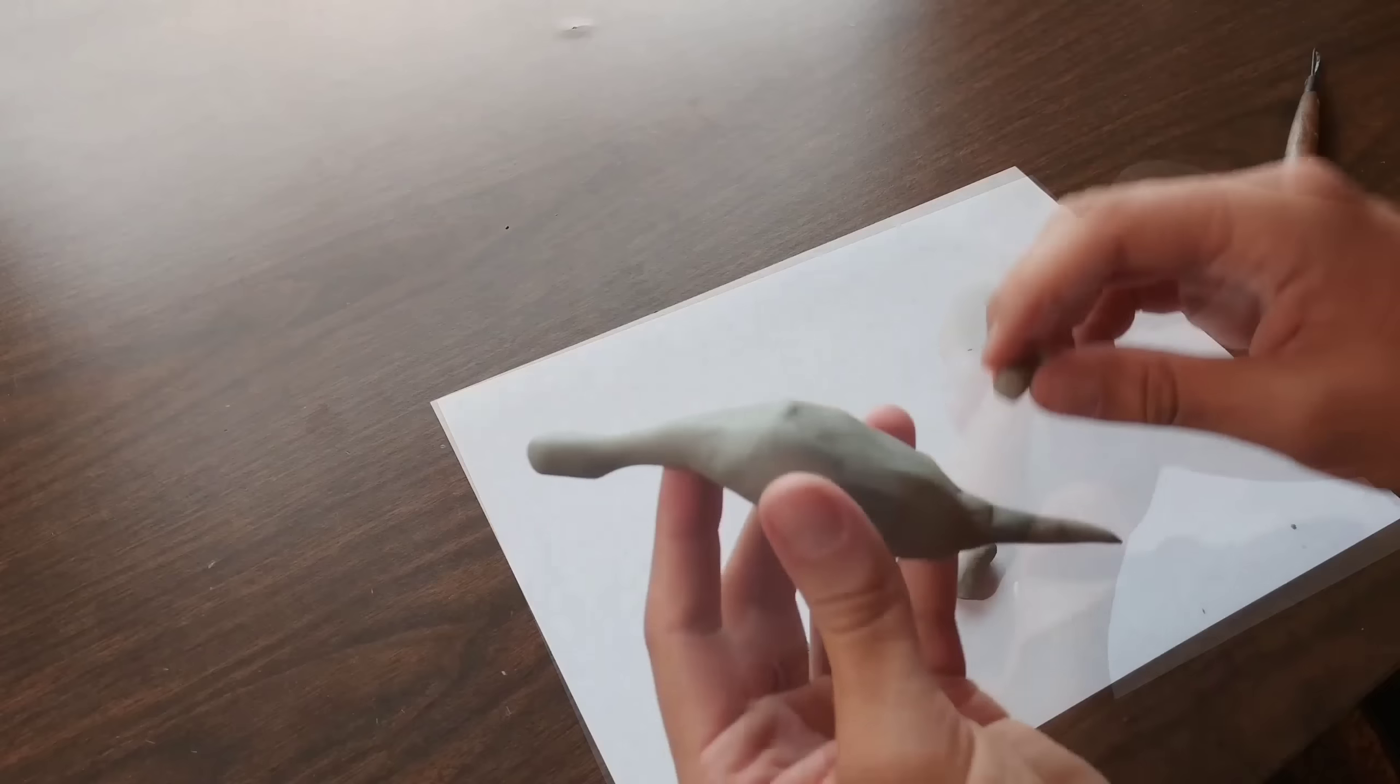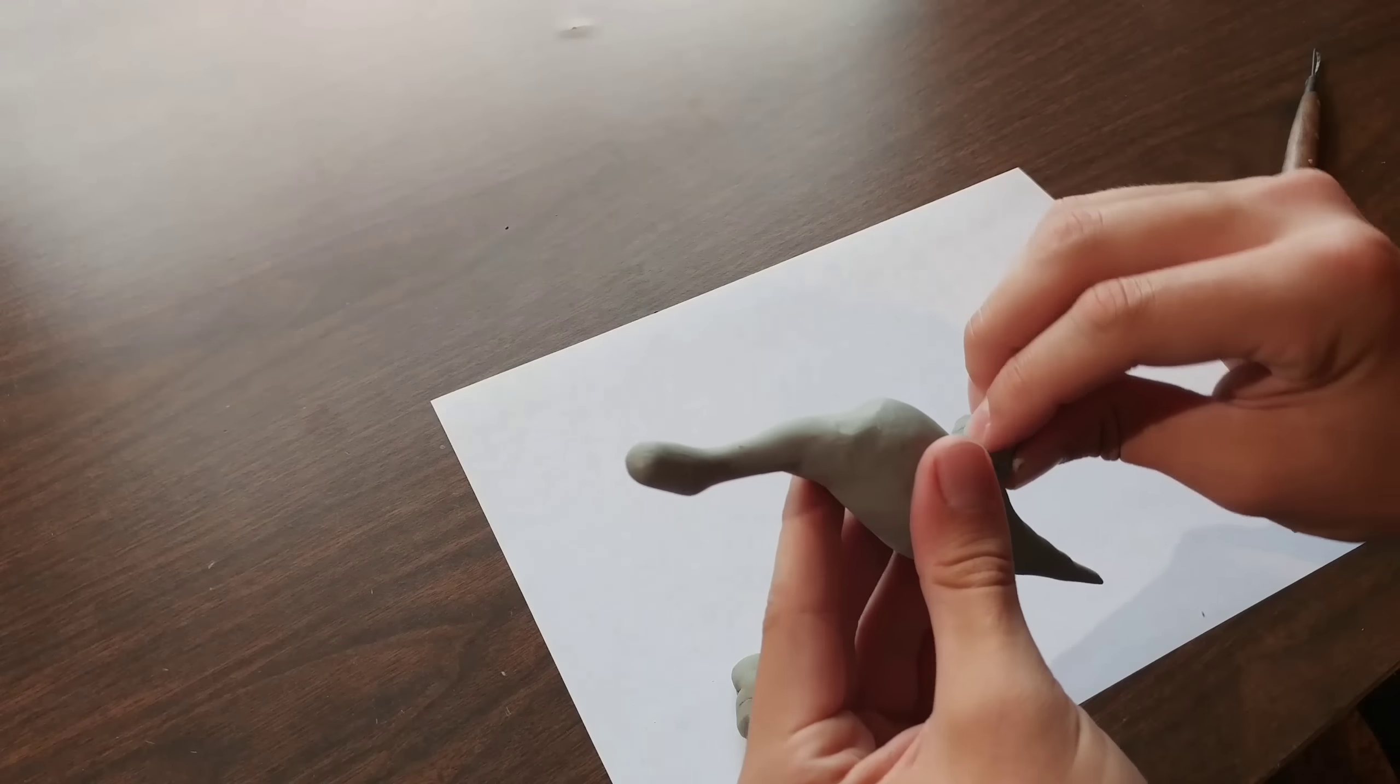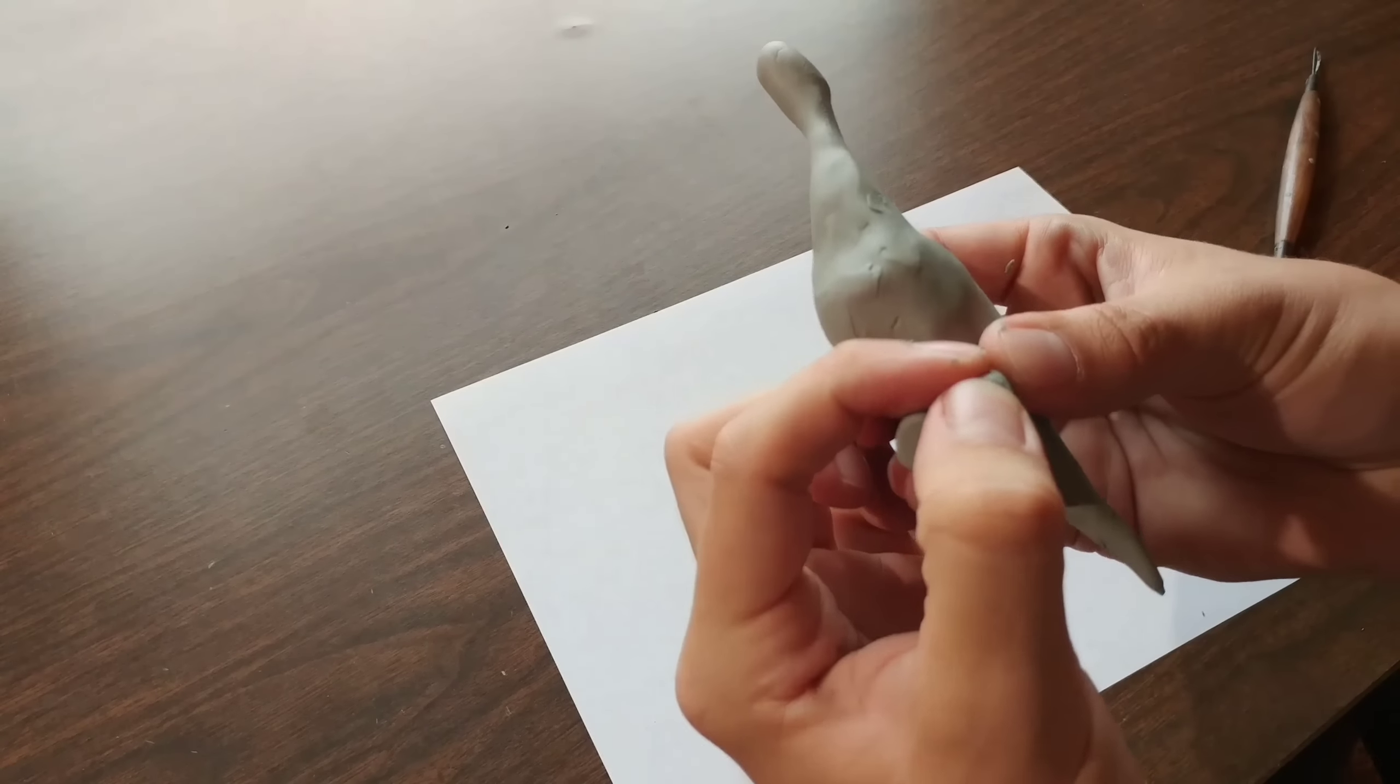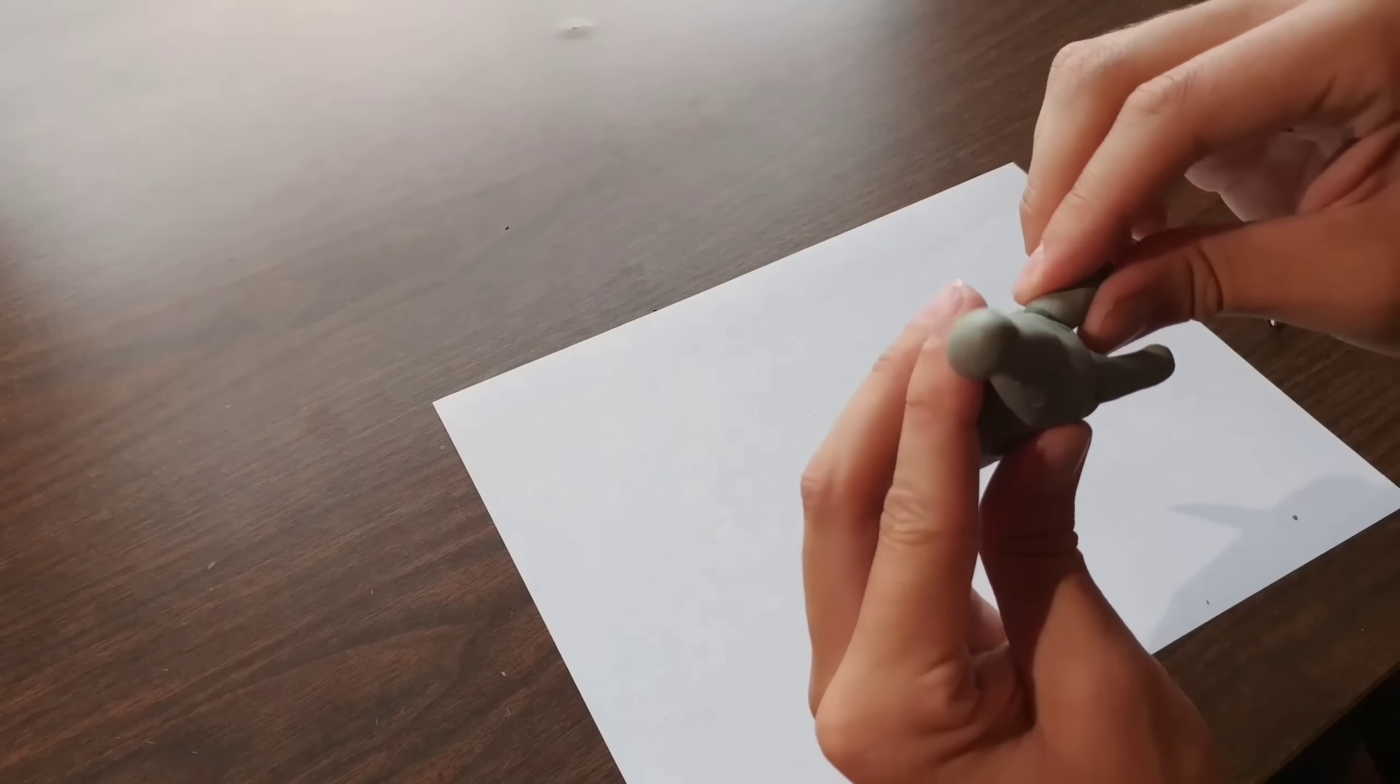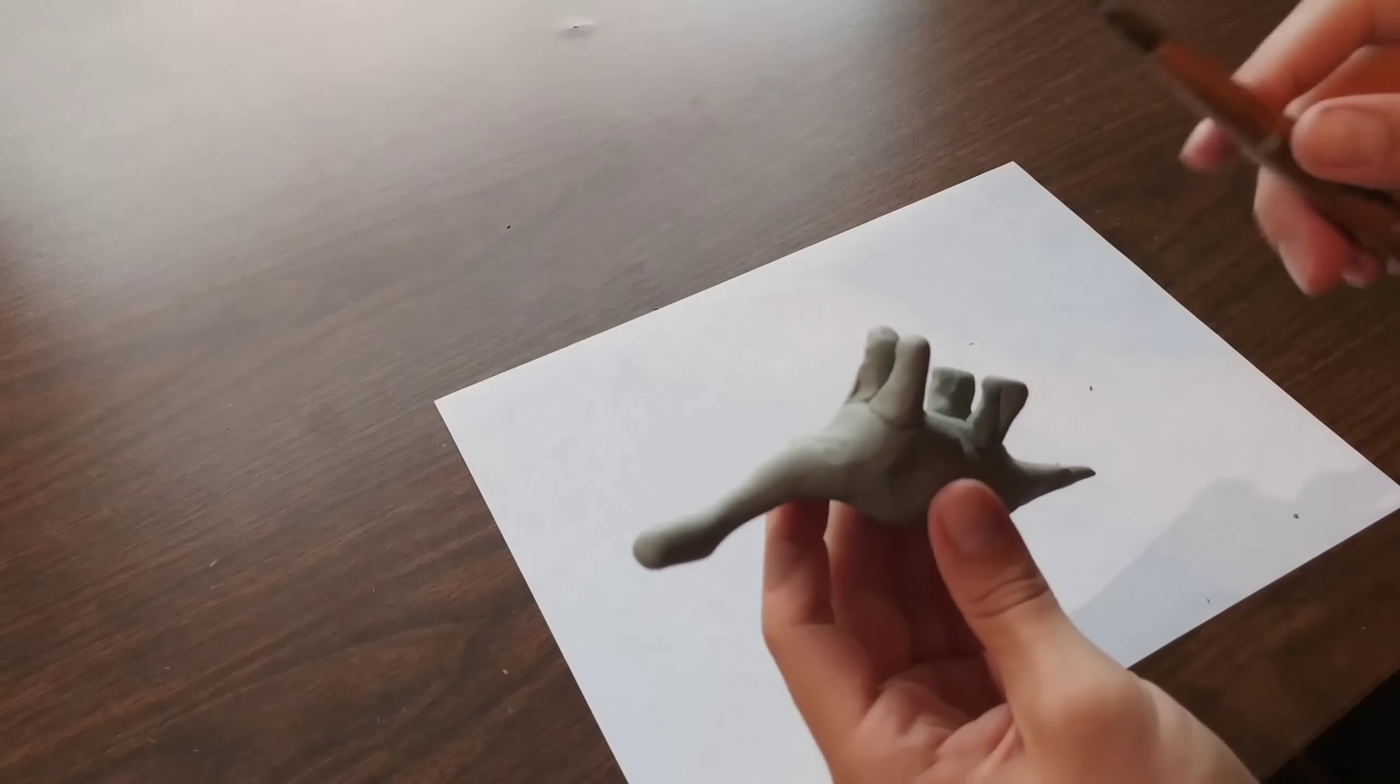Next we are attaching the legs. This is a little bit tricky because since it's a small dinosaur, it's hard to get your fingers in there to smooth out those little seams where they attach to the body. So go ahead and just get all of them on, and then we're going to use a tool of some sort after we try what we can with our thumb.